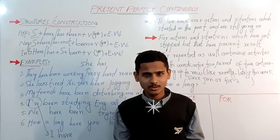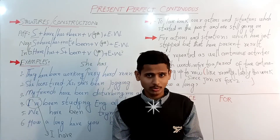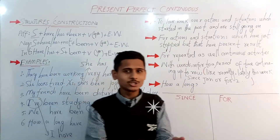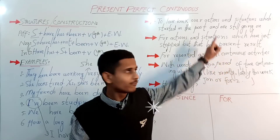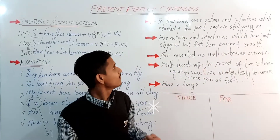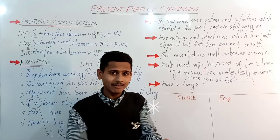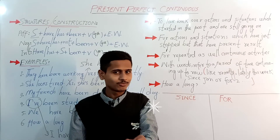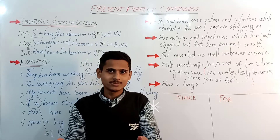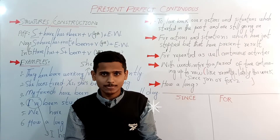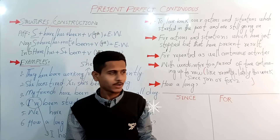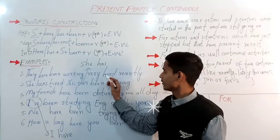Up to this point, the video was for beginners and the general audience. From now on, I'm going to discuss the advanced points regarding present perfect continuous or progressive tense. The first usage: we use it to look back over actions and situations which started in the past and are still going on — whether naturally triggered or started by someone.